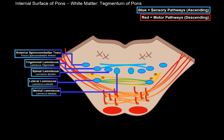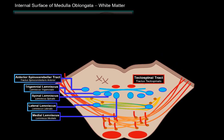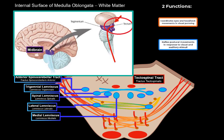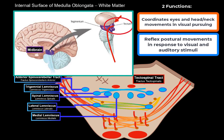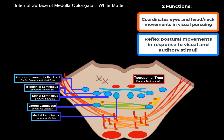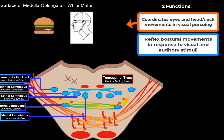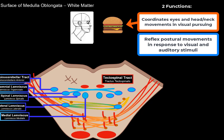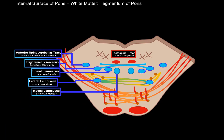The first descending tract in the tegmentum is the tectospinal tract. These fibers come from the tectum of the midbrain and are associated with coordinated eye and neck movements. Since this tract originates from the brainstem, it's an extrapyramidal tract — it unconsciously moves your neck muscles with your eyes. When you look at something moving past you, your neck muscles unconsciously follow your eyes; that's what the tectospinal tract is responsible for.